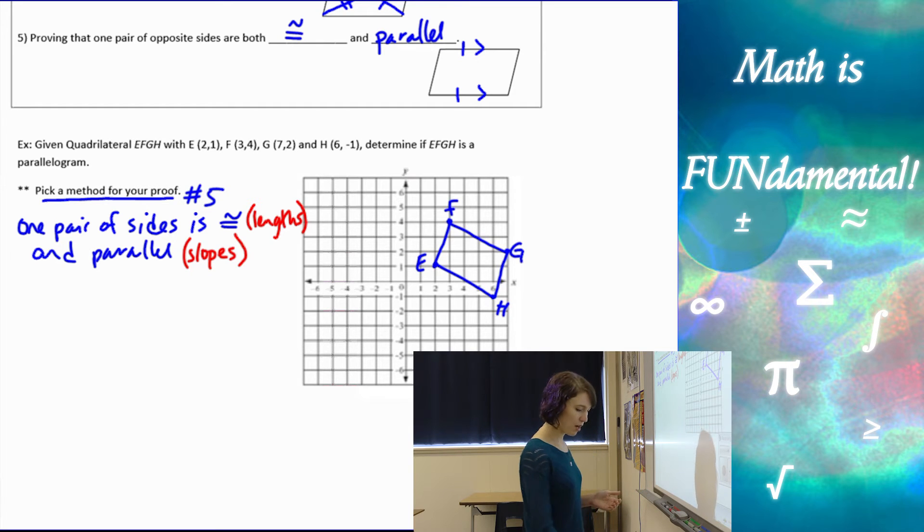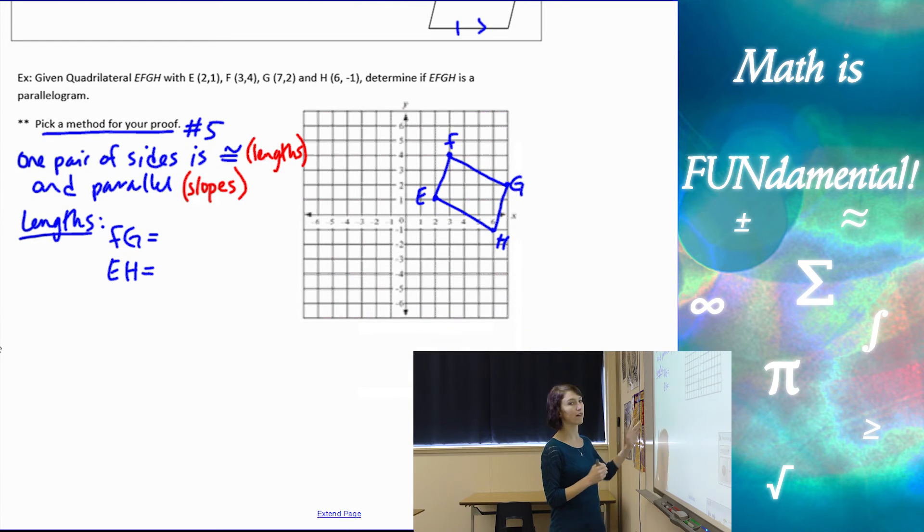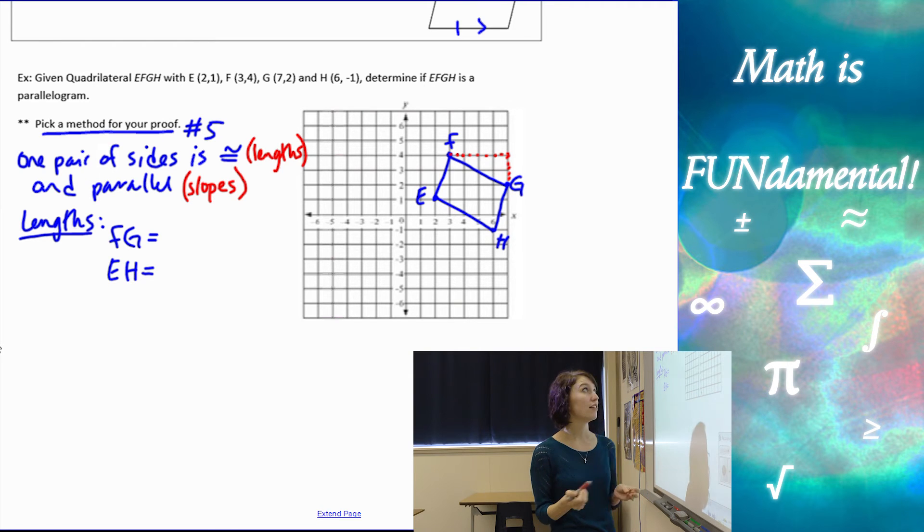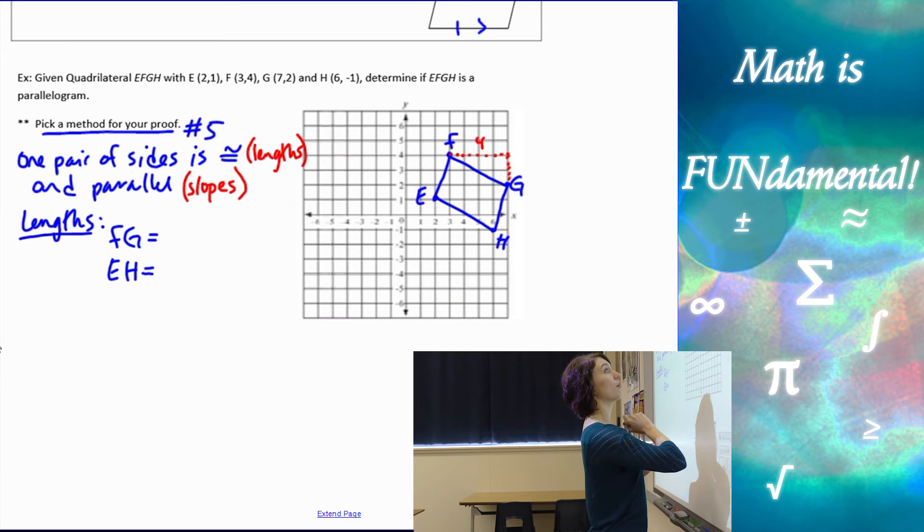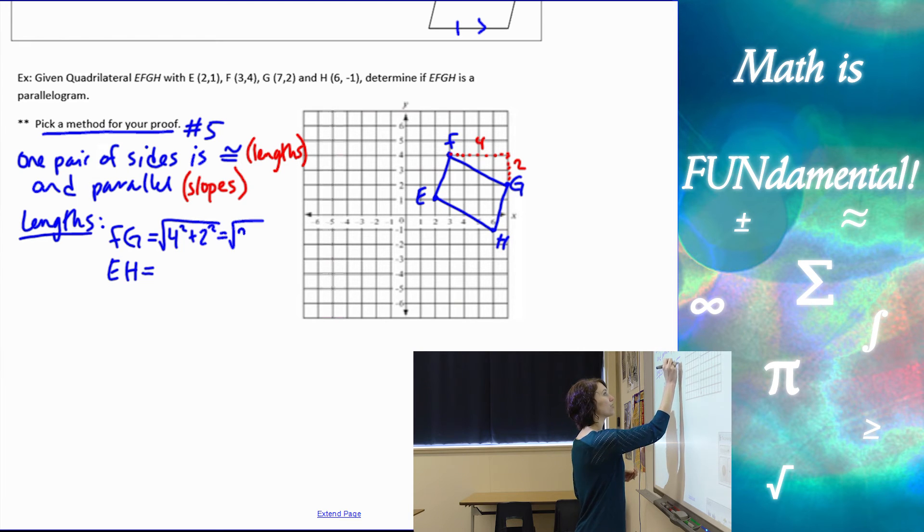I'm going to choose FG and EH. Let's do lengths first. We can use distance formula or my favorite, Pythagorean theorem. From F to G, we make a right triangle. This length is 4 and this is 2, so FG equals the square root of 4 squared plus 2 squared. That's 16 plus 4, which is 20, which equals 2√5. Always simplify your square roots.